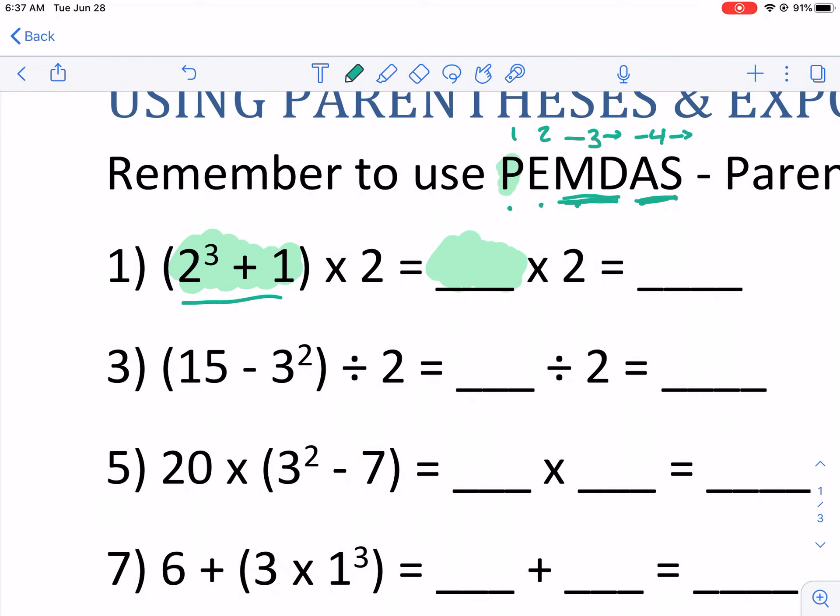And we see that there are exponents, so I'm going to do that first. Two to the third power I know is eight. That's two times two times two. That's what exponents are, repeated multiplication. And then I have plus one. So if I do eight plus one inside the parentheses, I'm going to get nine.